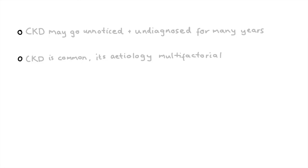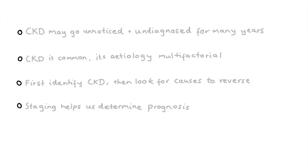In summary, CKD may go unnoticed and undiagnosed for many years. CKD is common and its etiology is multifactorial. We need to first identify CKD and then look for causes that we can reverse. Staging helps us determine the patient's prognosis. And lastly, CKD increases cardiovascular disease risk.